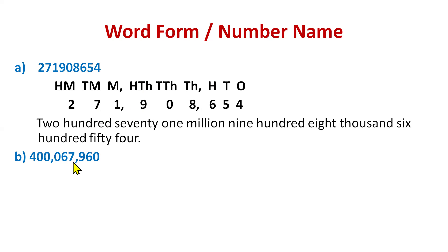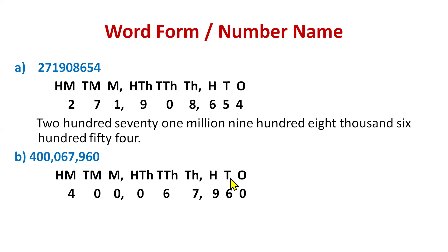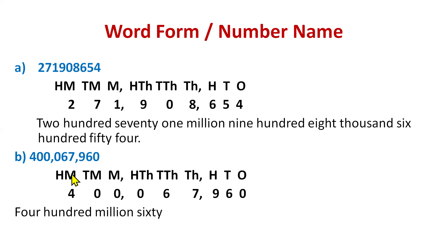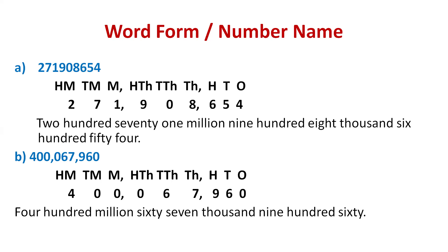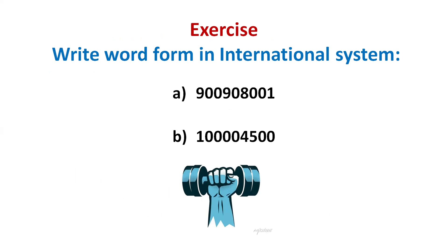For the next part, again write down the digits, then write the places above the digits starting from the rightmost digit. This time we have many zeros but the rule is the same. Reading till the comma, we get four hundred million — we do not have ten million or million here. The answer is: four hundred million, sixty-seven thousand, nine hundred sixty.